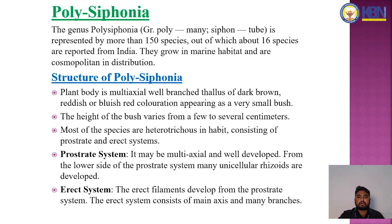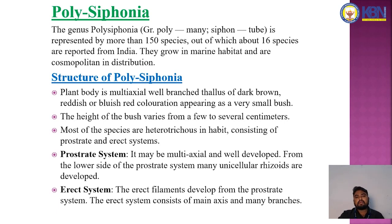Next is the genus Polysiphonia, represented by more than 150 species. The word Polysiphonia is derived from the Greek words 'poly' meaning many and 'siphonia' meaning tube. About 16 species are reported in India. They grow in marine habitats under a cosmopolitan distribution.